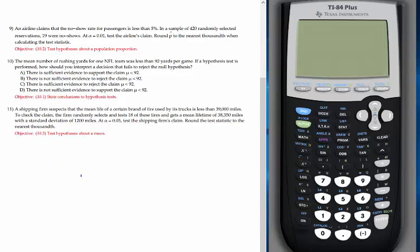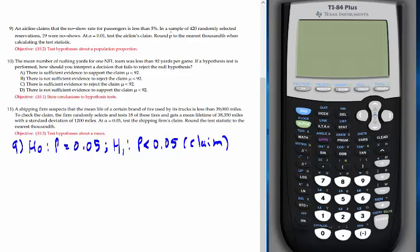Number nine. An airline claims that the no-show rate of passengers is less than 5%. Let's write H0: p equals 0.05, H1: p less than 0.05. This is where the claim is. In a sample of 420 selected reservations, so n=420, 19 were no-shows, so x=19. At alpha equals 0.01, test the airline's claim.